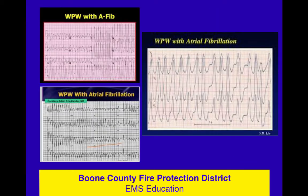Here are some examples of WPW with atrial fib and they are just flat scary — you get a gasp from everybody when the 12-lead prints out. I would point out that in lead two, it doesn't always look that scary. The most scary views are in the chest leads. So if you're not getting a 12-lead on your wide, complex, irregular, polymorphic tachycardia patient, you may not really catch this — and this is a very scary rhythm because the stuff you would normally do is not just worthless, it's dangerous.